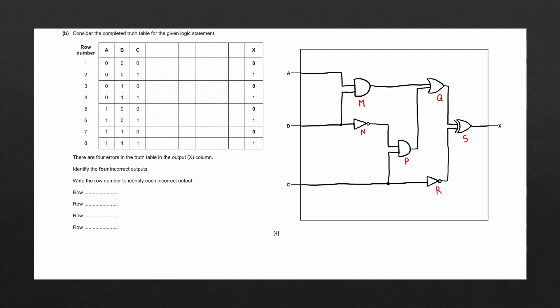Let's have a look at part B. Consider the completed truth table for the given logic statement. There are four errors in the truth table in the output X column. Identify the four incorrect outputs and write the row number to identify each incorrect output. The way we're going to identify these outputs is by completing the entire truth table and then comparing the last two columns.